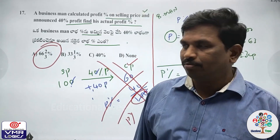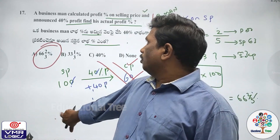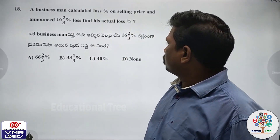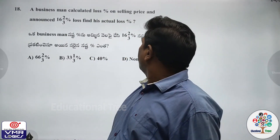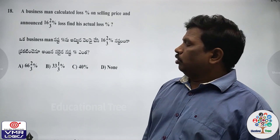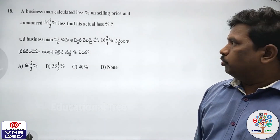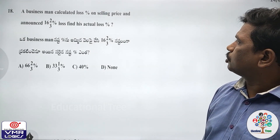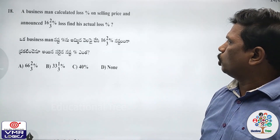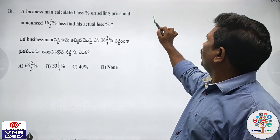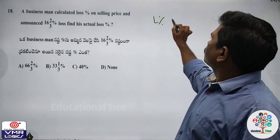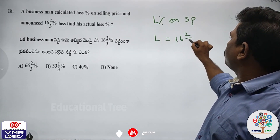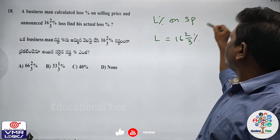Is this clear? Next, question number 18. A businessman calculates the loss percentage on the selling price and announces 16 and 2 by 3 percent loss. Find the actual loss percent.